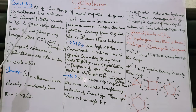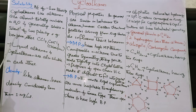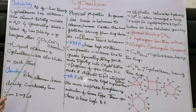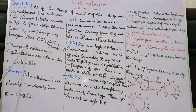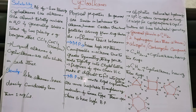Regarding solubility: because of very low polarity — almost non-polar — cycloalkanes are almost totally insoluble in water, but are generally soluble in solvents of low polarity such as benzene, ether, CCl4 (carbon tetrachloride), and CHCl3 (chloroform). The principle is 'like dissolves like.' Cycloalkanes are also soluble in liquid alkanes.